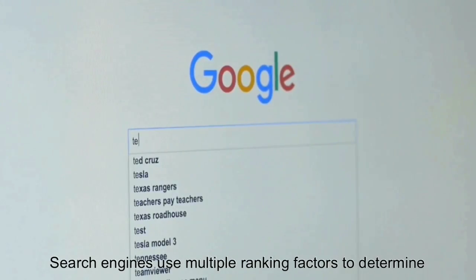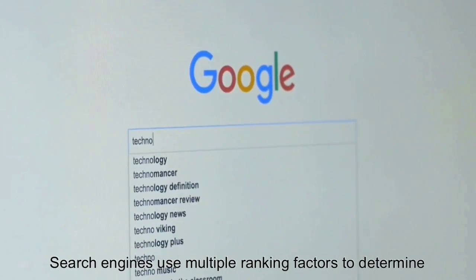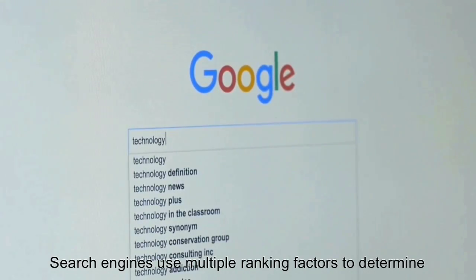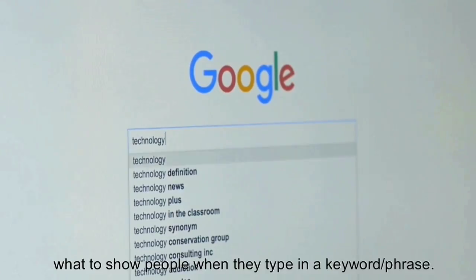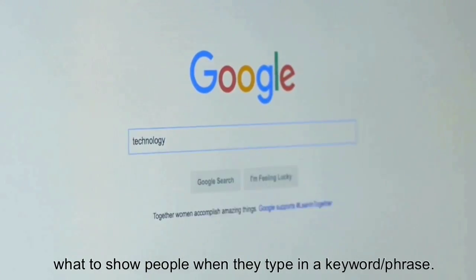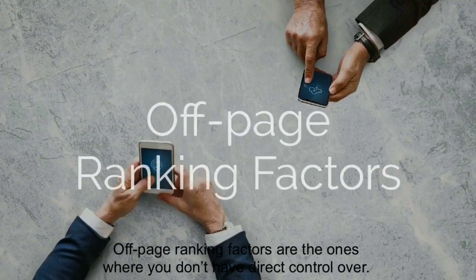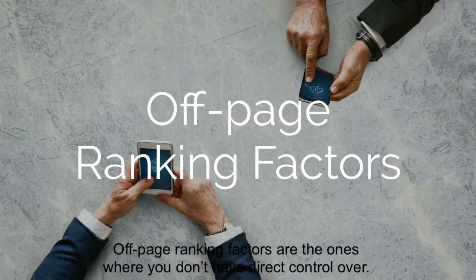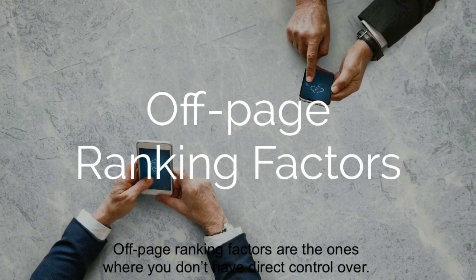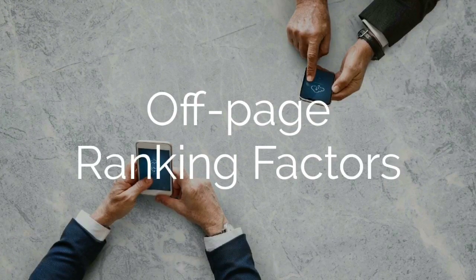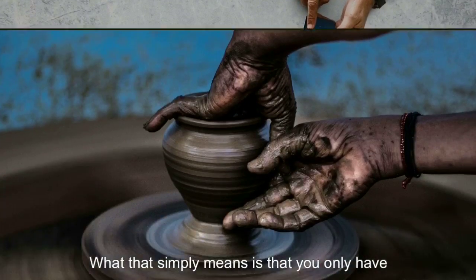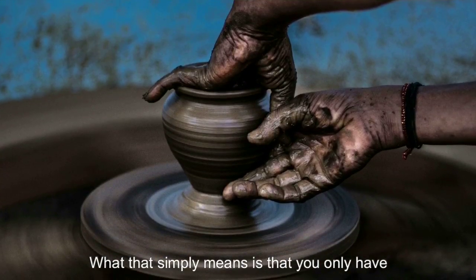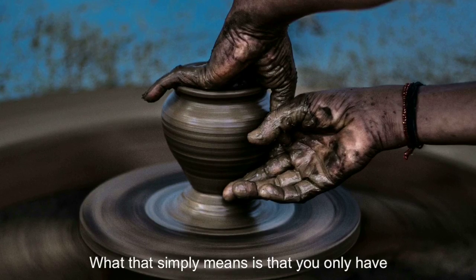Search engines use multiple ranking factors to determine what to show people when they type in a certain keyword or phrase. Off-page ranking factors are the ones where you don't have direct control over, which simply means that you only have a certain level of influence over these factors.